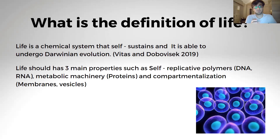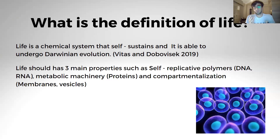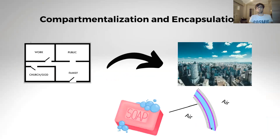The three main properties are: self-replicative polymers — known as DNA and RNA, which you can think of as systemic memory or genetic material; metabolic machineries such as proteins, which function as enzymes and hormones; and compartmentalization. I'm not talking about just a phospholipid layer membrane — compartmentalization can be made by membranes and different vesicles.